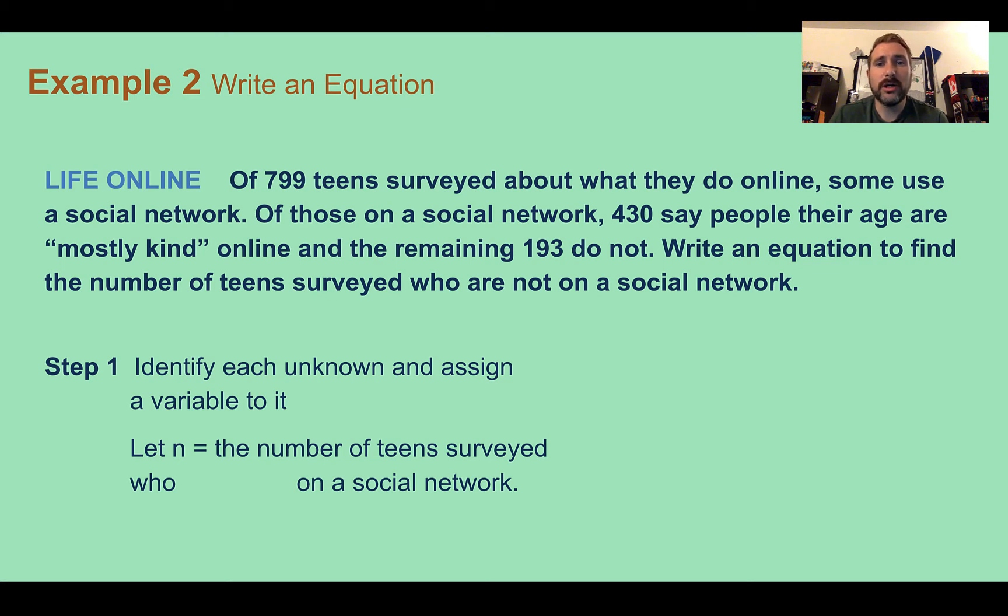Of those on a social network, 430 say people their age are mostly kind online, and the remaining 193 do not. Write an equation to find the number of teens surveyed who are not on a social network.